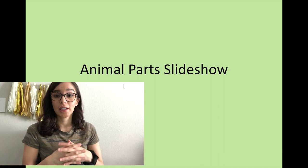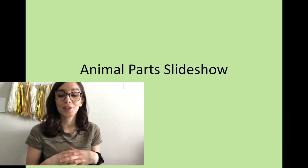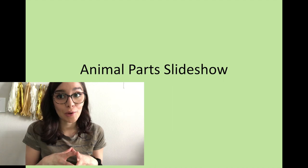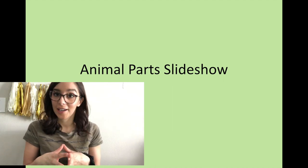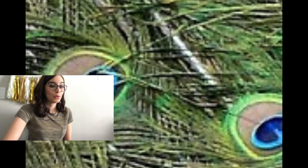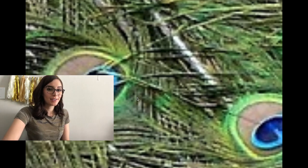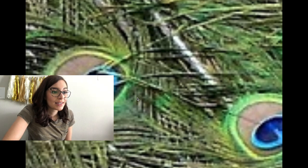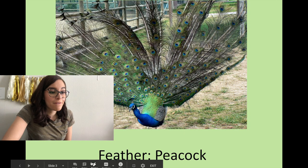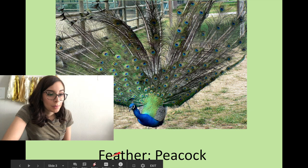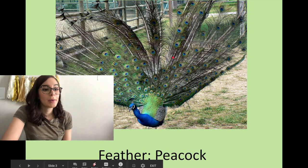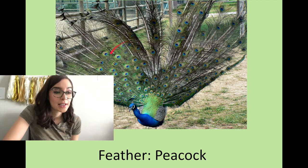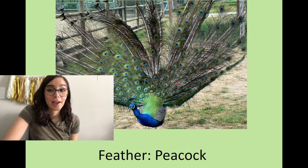I have some pictures here that I want to share with you guys, and we are going to guess what animal each part comes from and what part of it it is. Here's the first one — does anybody recognize that? It is a feather from a peacock. Peacocks use these bright feathers to help attract a mate.